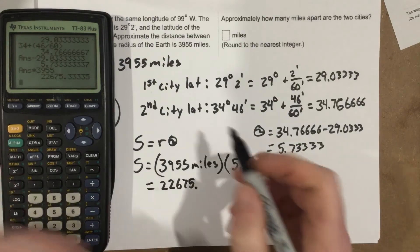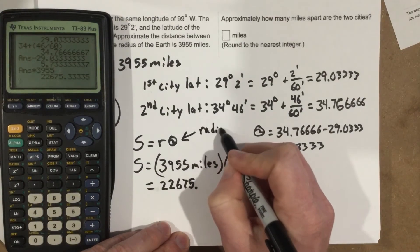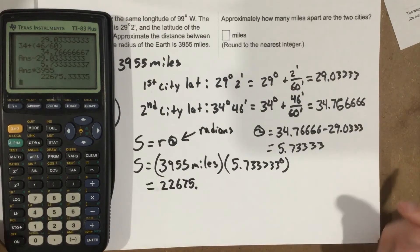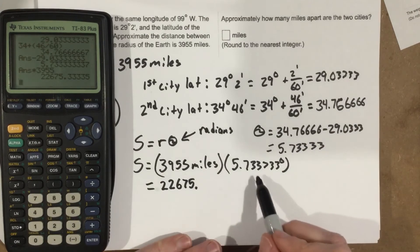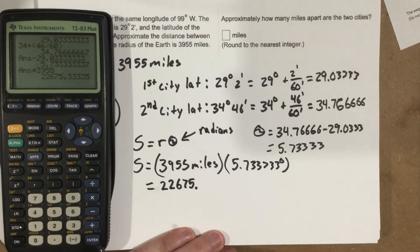Remember the arc length formula — this has to be in radians. I was using degrees, and the result was 22,000 miles, which can't be right. The radius is only 3,955, so 22,000 miles going around the earth for that small an angle is wrong. The problem is I'm using degrees instead of radians — this is where you can get yourself in trouble. How do we convert from degrees to radians?